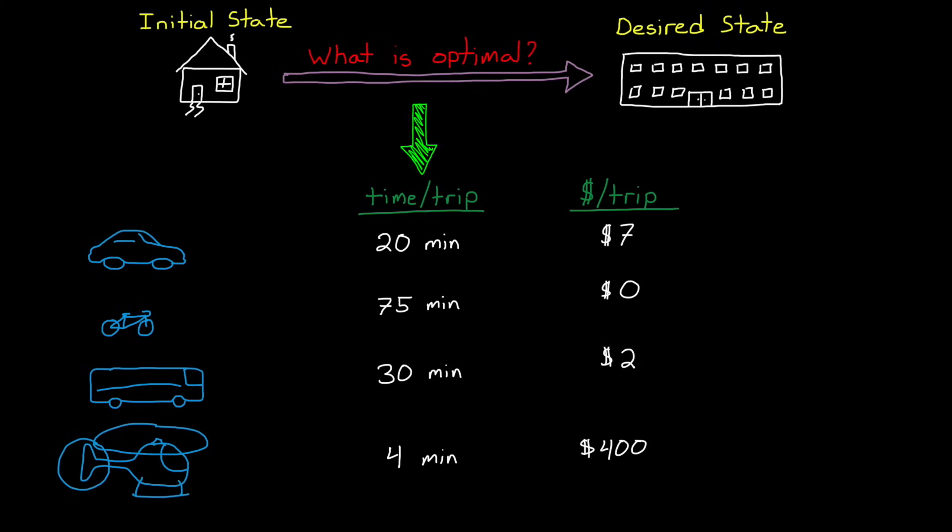If I said that time is the most important thing, get to work as fast as possible, then the optimal solution would be to take the helicopter. On the other hand, if I said that you don't have much money, and getting to work as cheaply as possible was a good outcome, then riding your bike would be the optimal solution. Of course, in real life you don't have infinite money to maximize performance, and you don't have unlimited time to minimize spending. But rather you're trying to find a balance between the two.